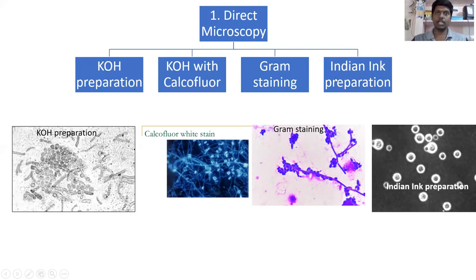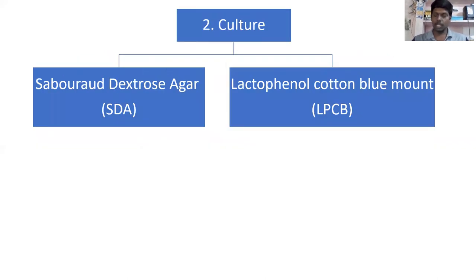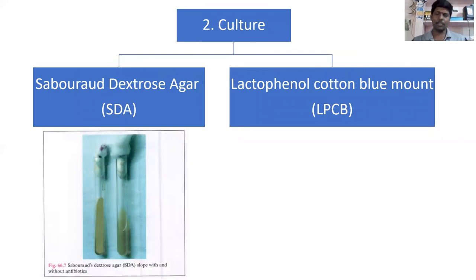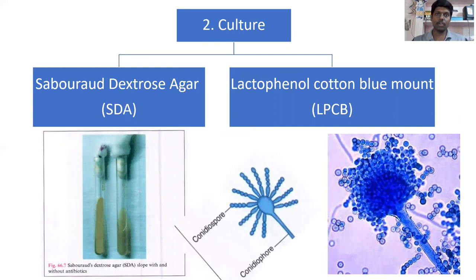Those are the four methods in direct microscopy. Next we have culture, where we use SDA — Sabouraud's dextrose agar — a highly specific fungal medium for growing fungus while eliminating contaminating fungi and bacteria. After growth, we observe the fungus under lactophenol cotton blue mount, which allows visualization of the complete structure of the fungus without altering its morphology.